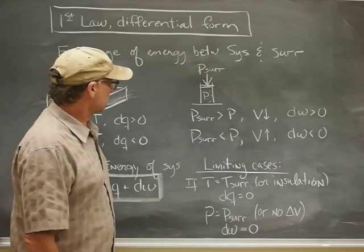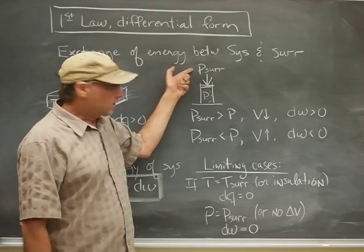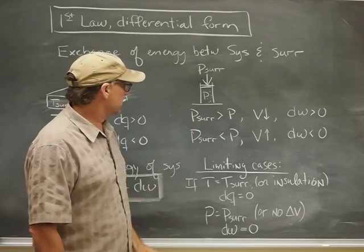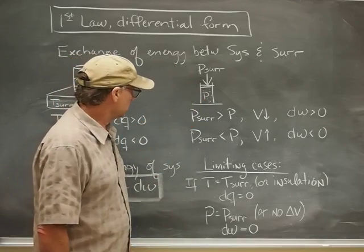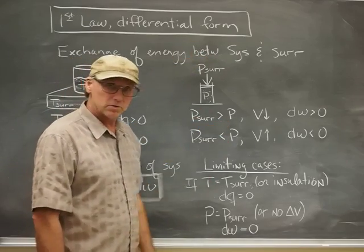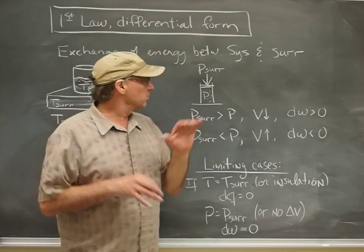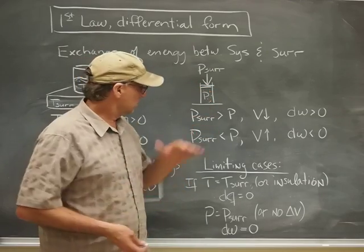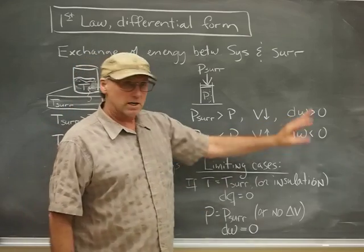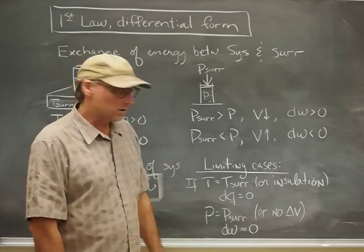The other one is through work, and I've just imagined a tire pump here. You've got a surrounding pressure. You've got some gas inside there, which is at a pressure. If the pressure of the surroundings right there is greater than the pressure in the air inside the tube, then we know that, assuming this can move, the volume will go down, and what we say is that DW is positive, that the surroundings do work on the system.